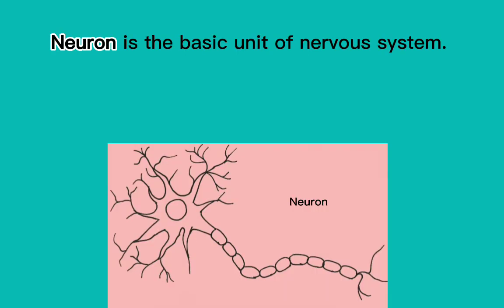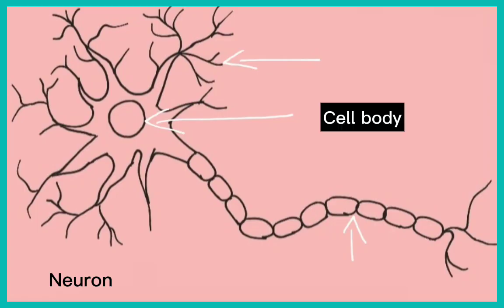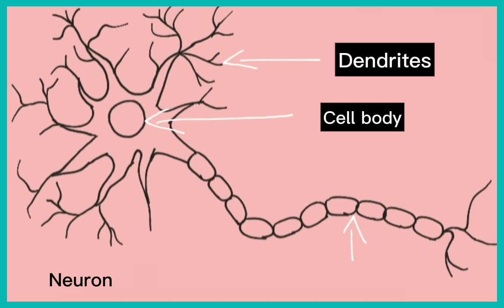Neuron is the basic unit of the nervous system. It consists of a nucleated cell body called the neurocyte, giving off a slender cell extension called an axon. A neuron is composed of a cell body where the nucleus is found, has one or more receptor fibers called dendrites, and an axon that branches at the tip. A neuron has only one axon.